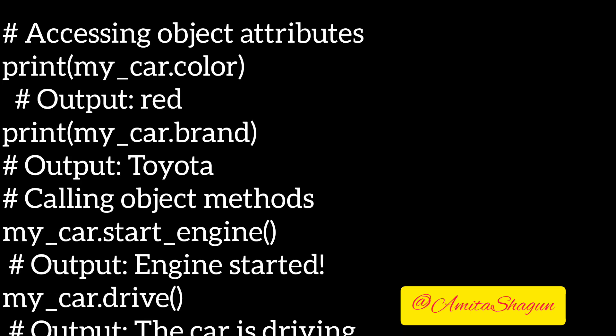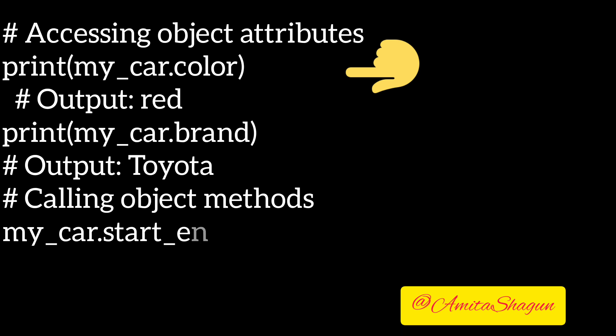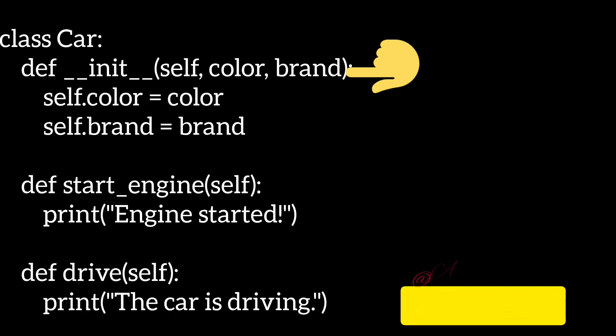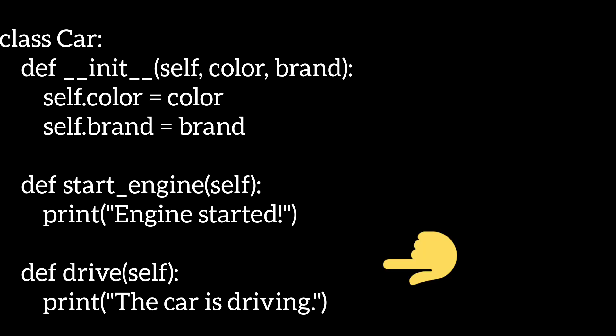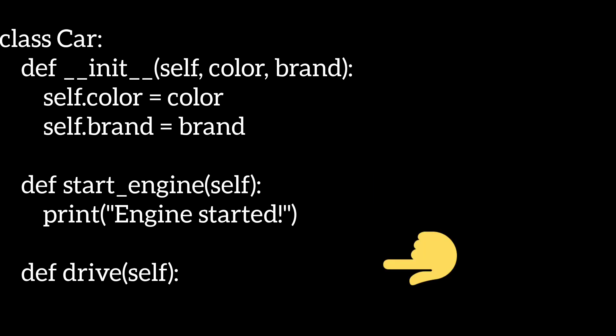We can access the object's attributes using dot notation — for example, object dot attribute. The Car class also has two methods, start_engine and drive, which we can call on the my_car object to perform actions specific to the car.